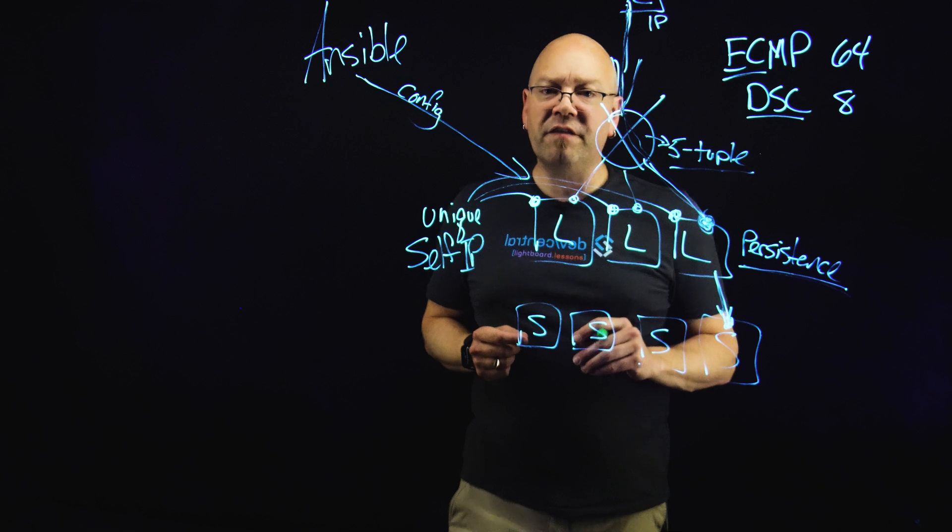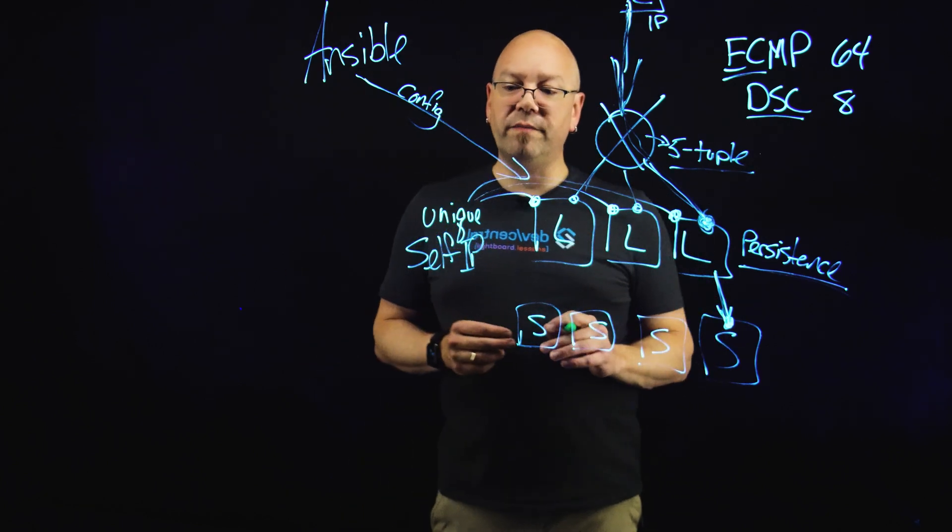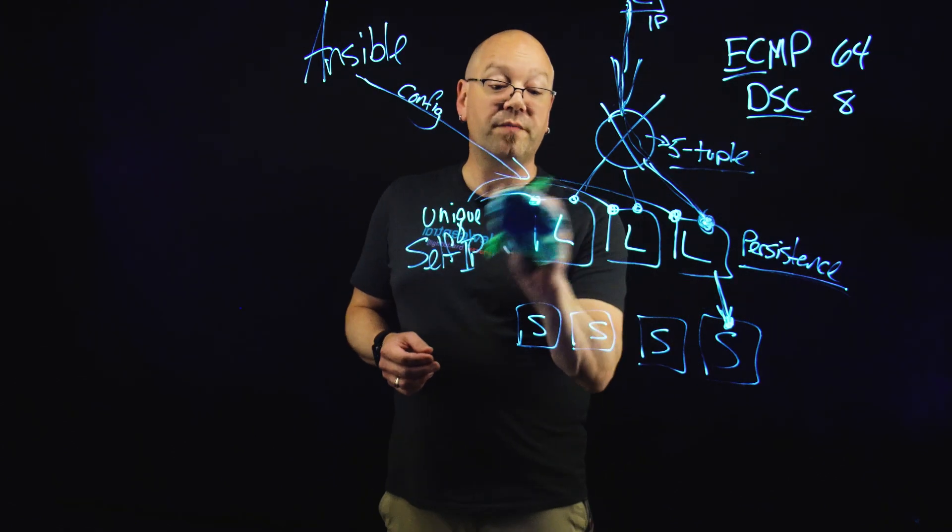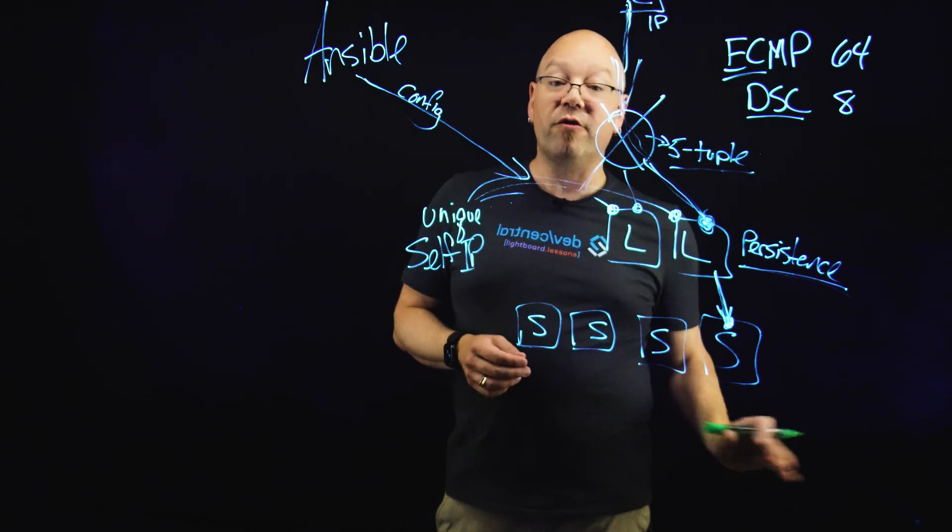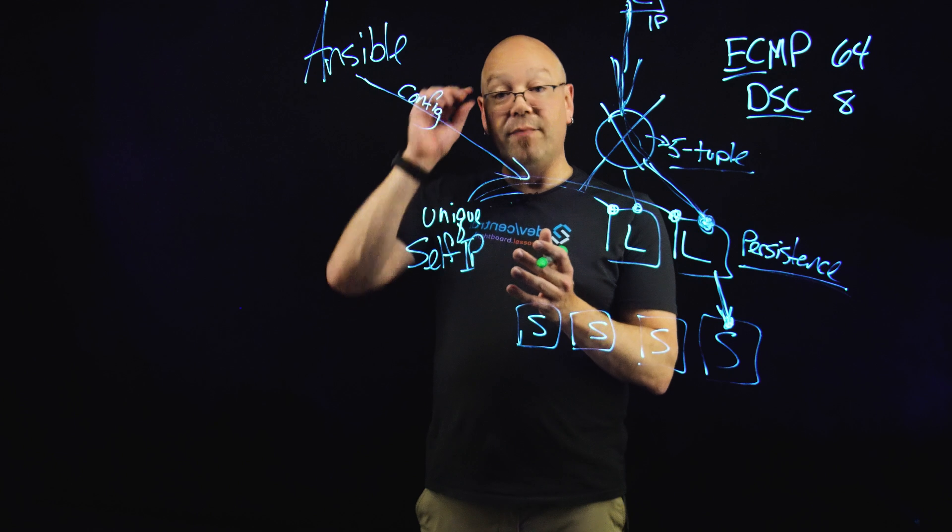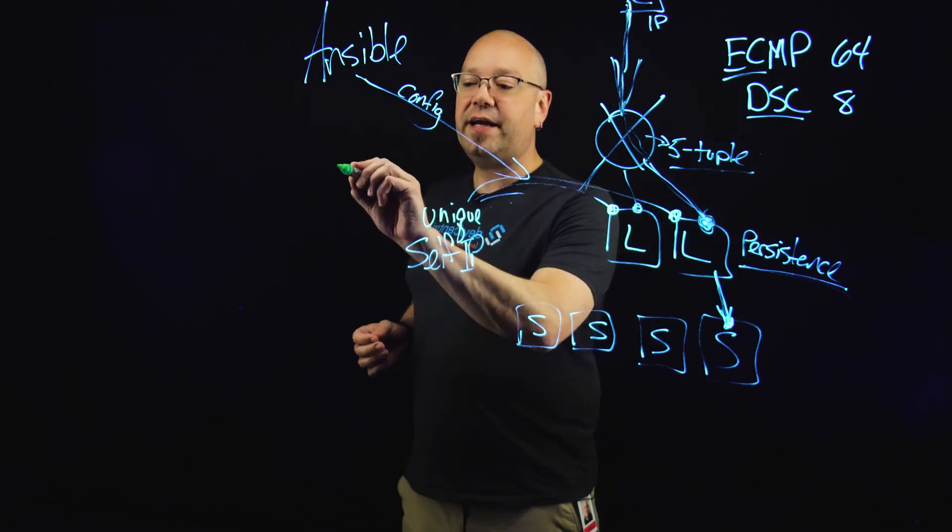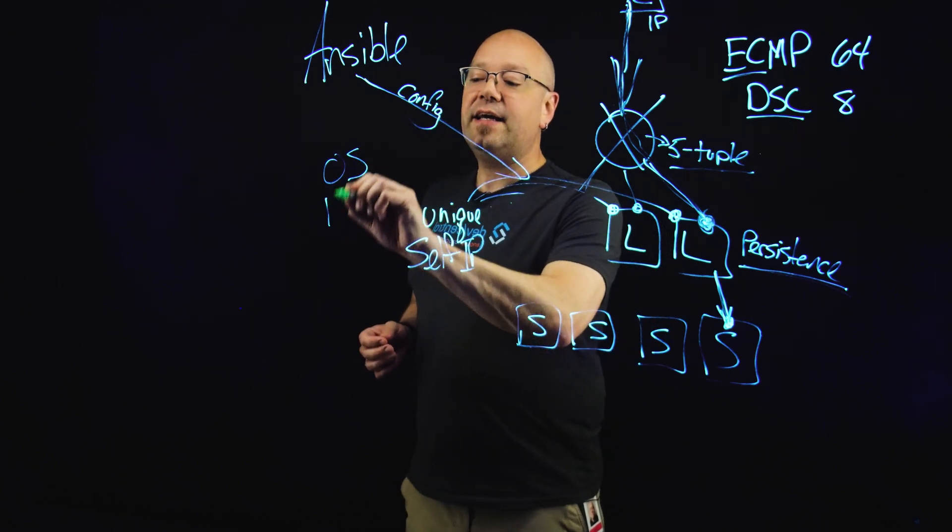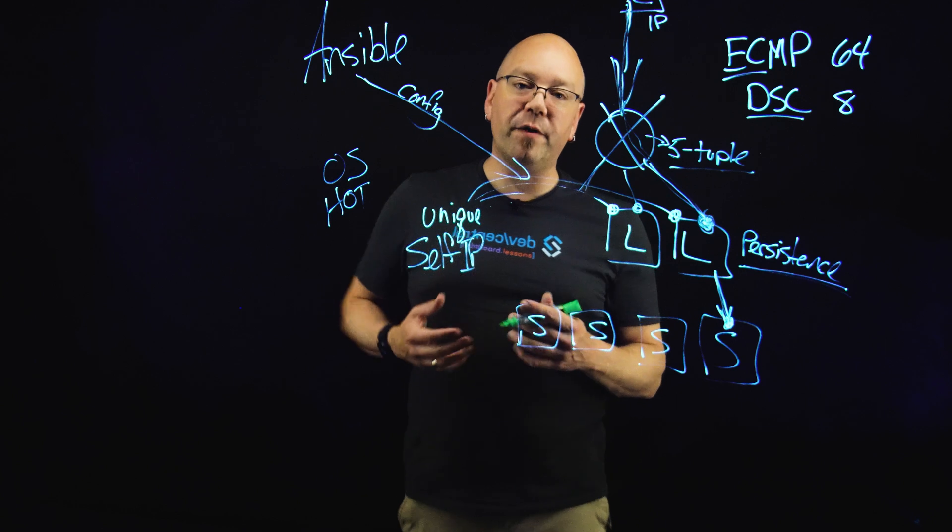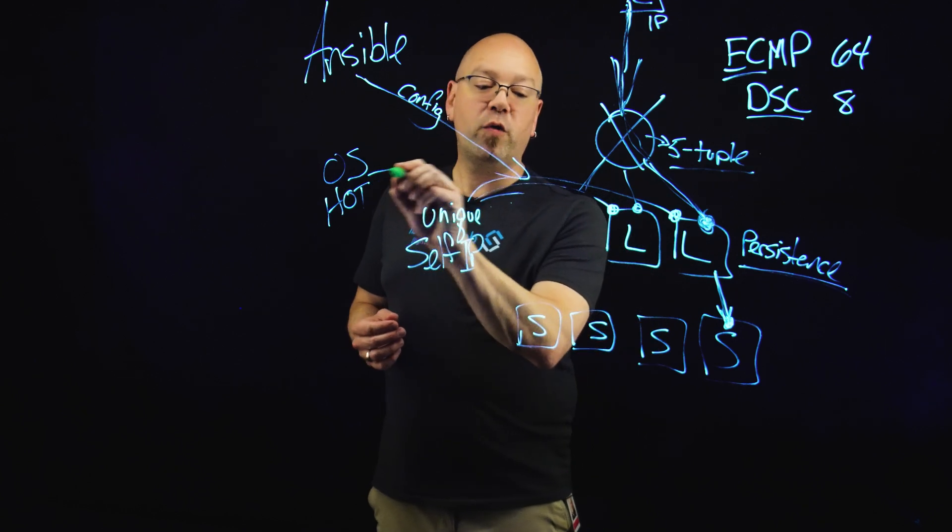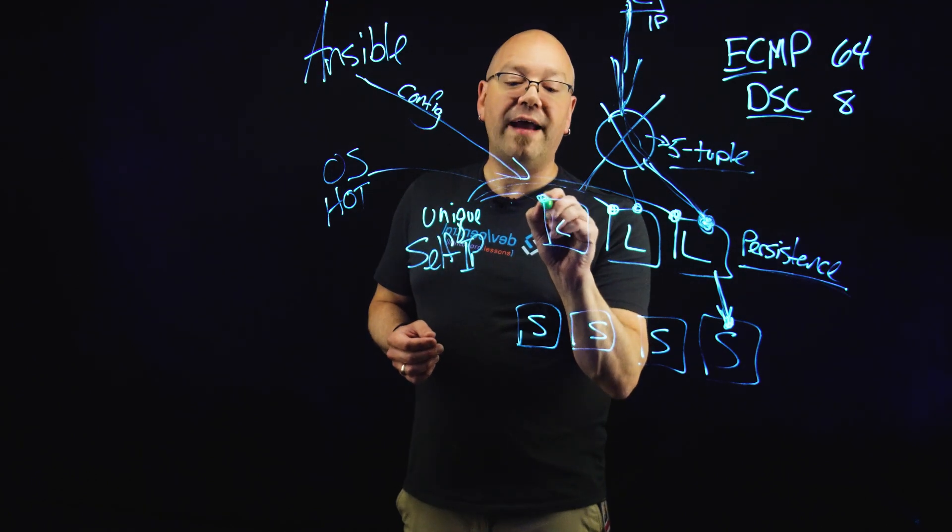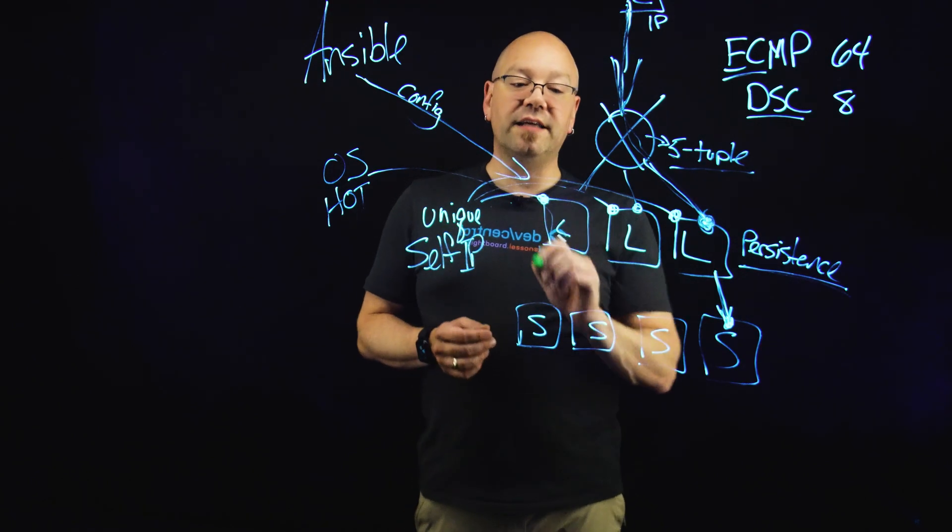Now what happens in the event of a loss? Well, in terms of let's say we lose a switch or a hypervisor or something in that manner and our LTM here ends up disappearing. Well, what we will have then is probably another utility such as an open stack heat orchestration template that would bring up, that would have a way to bring up a new LTM as quickly as possible and would have an understanding of that unique self IP address that existed on that LTM.